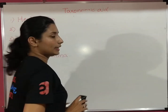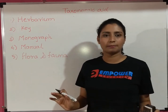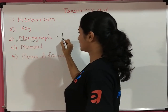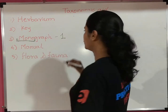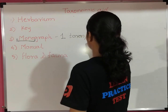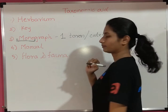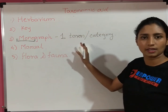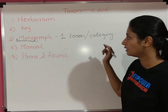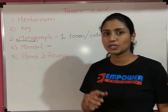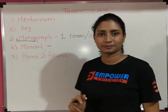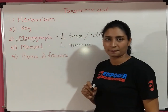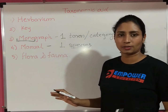The next taxonomic aid is monograph. A monograph involves the study of a single taxon — a single category of organism. Then the next one is manual, where only a single species is studied — only one organism. We call it a manual.